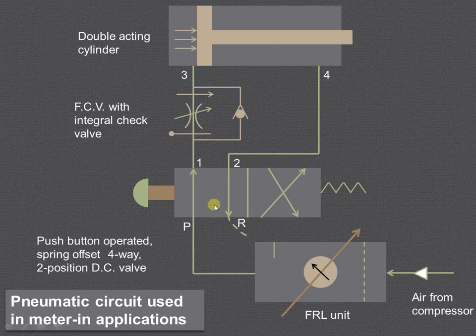It is a four-way, two-position direction control valve. Then we have the flow control valve with a restricted opening that can be variable, as shown by this arrow, and it is integral with the check valve.